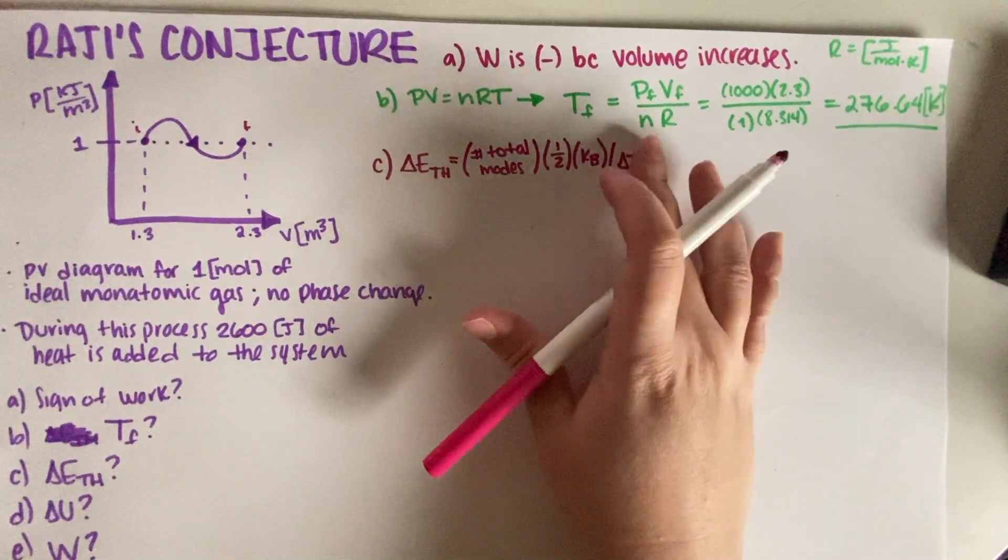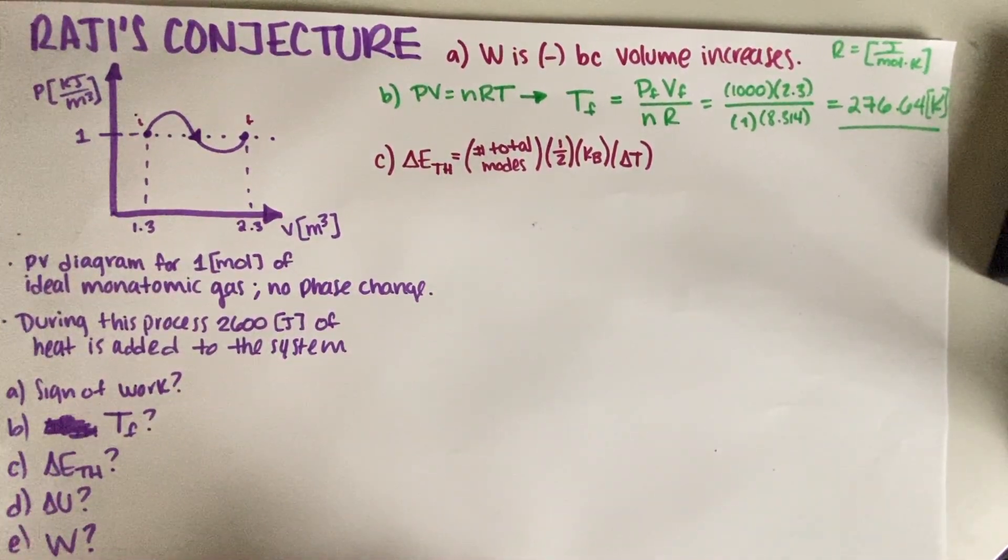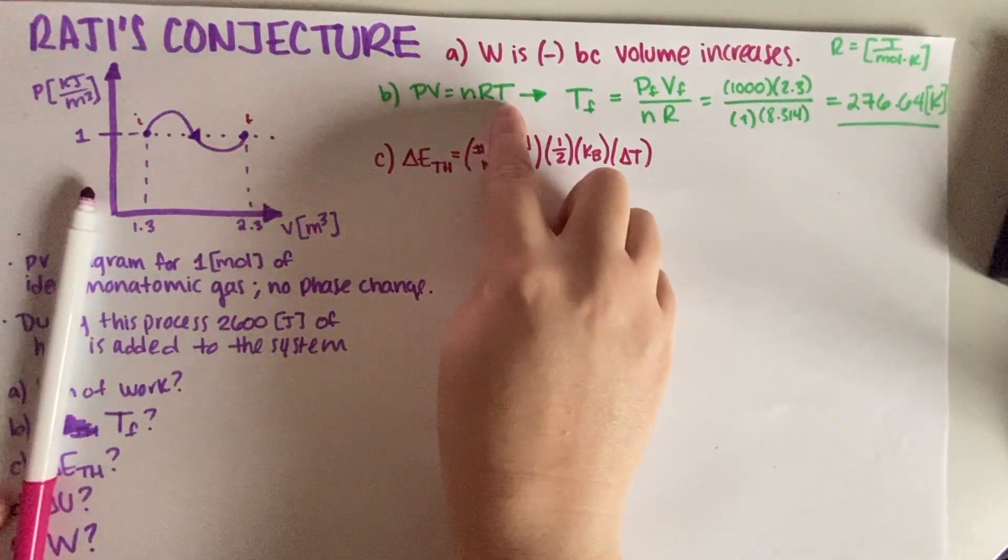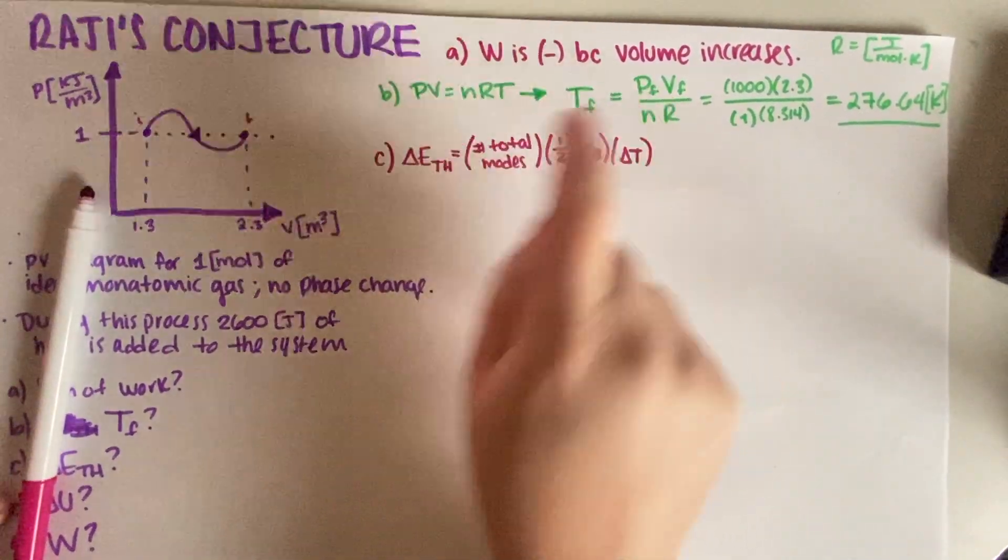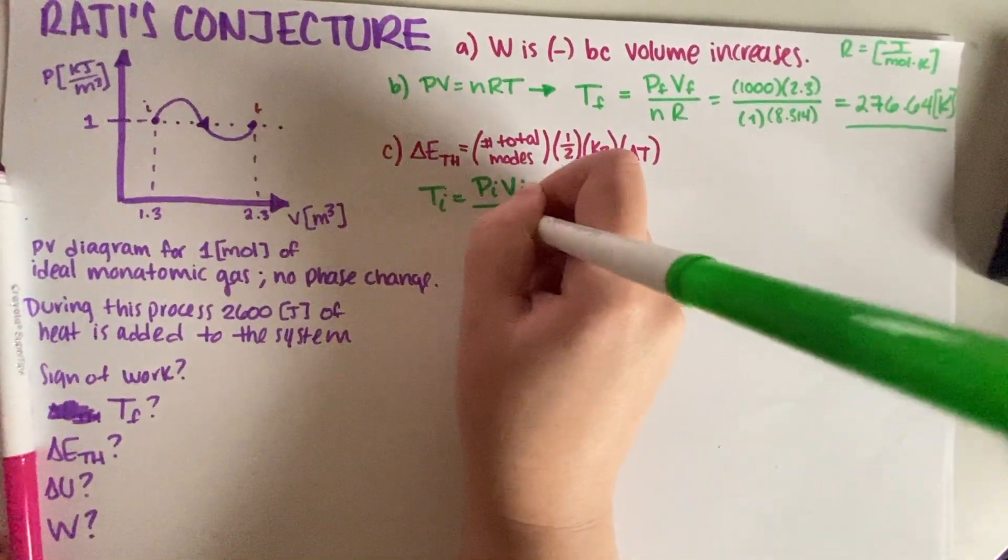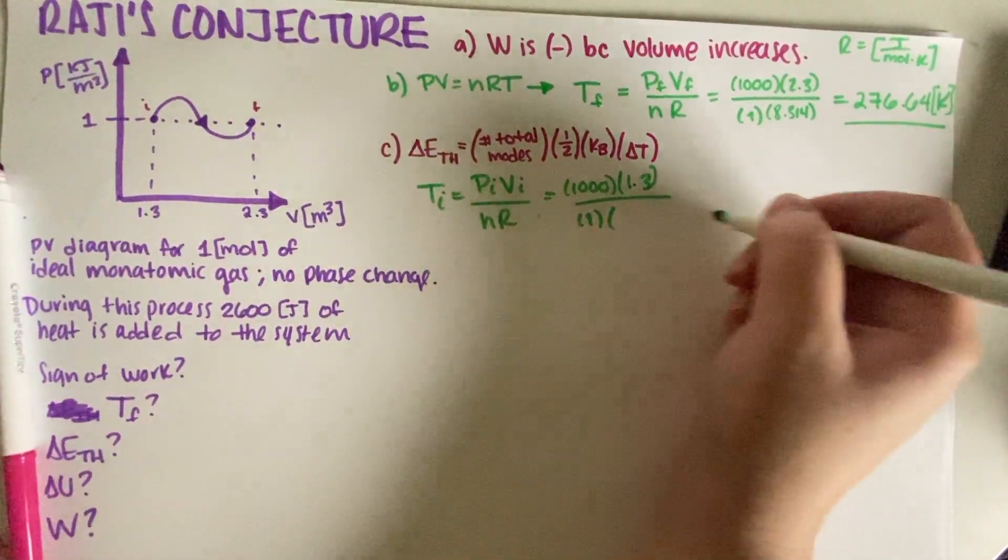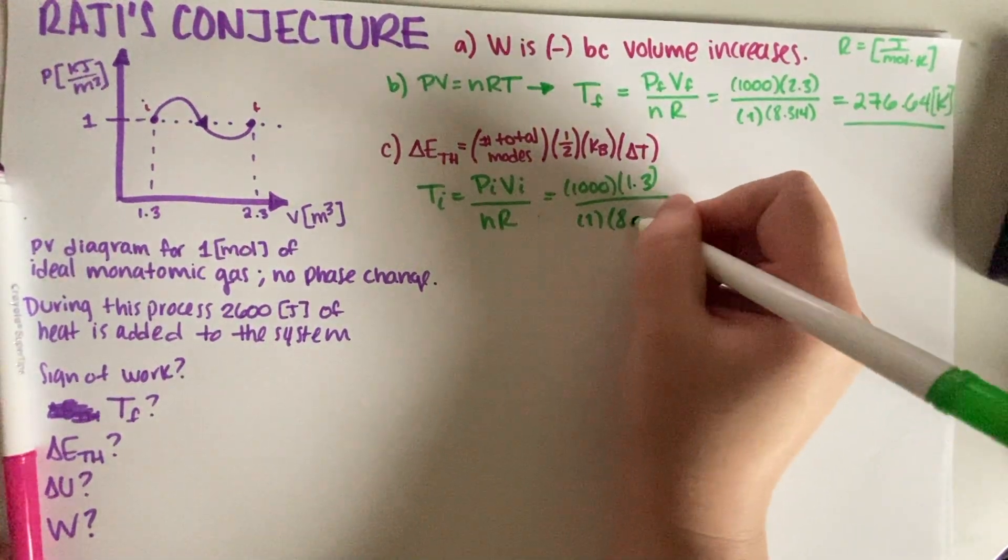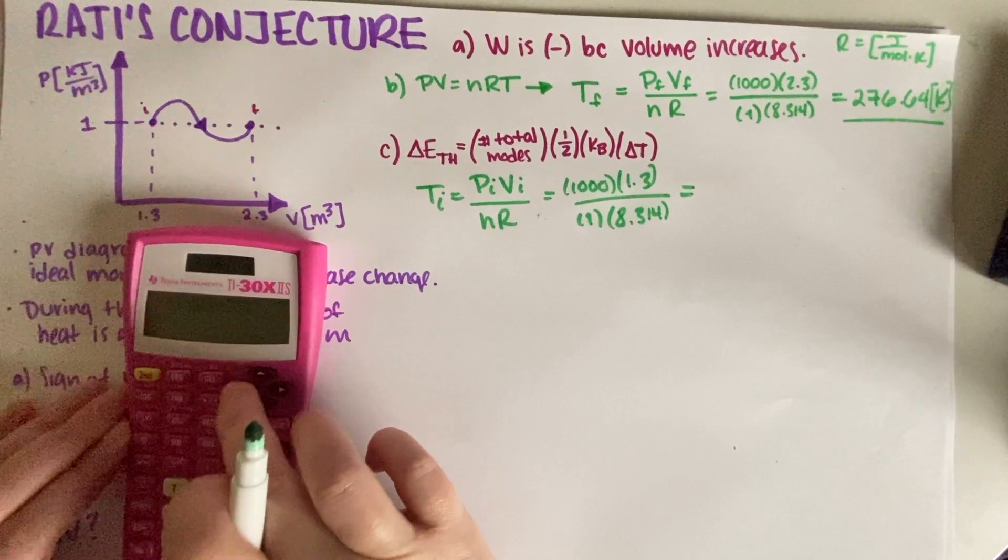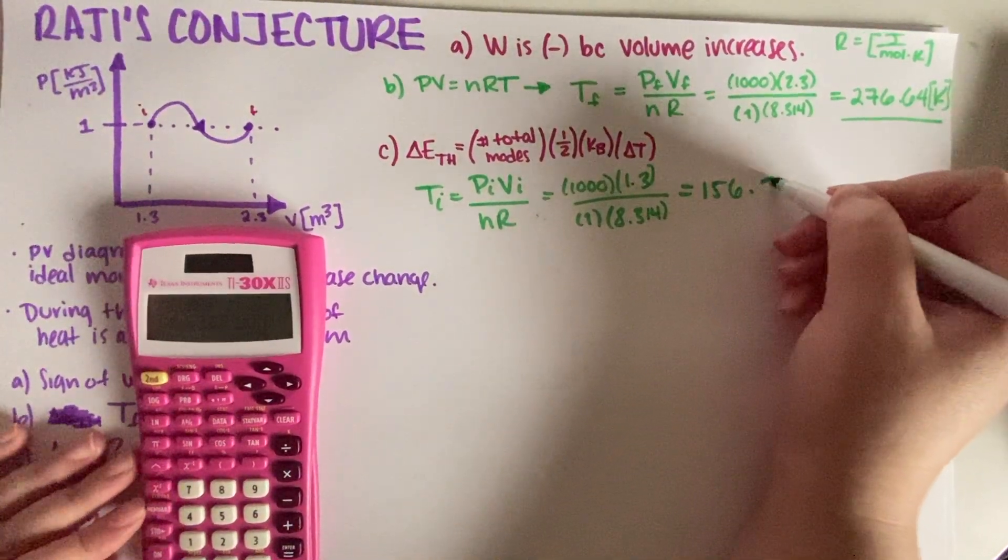So, we have to find our initial temperature. We have to find our initial temperature. So, let's just go ahead and do that. So, our initial temperature is, we're going to do exactly the same. We're going to use the ideal gas law, but now we're going to do initial, initial, initial. So, our initial temperature is our P_i, V_i, n and R. So, this is 1000. V_i is 1.3. n is 1. 8.314.